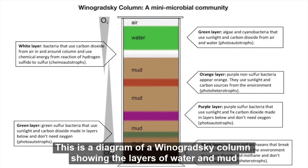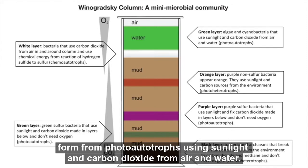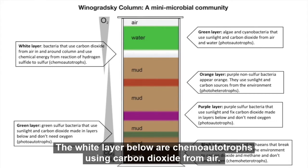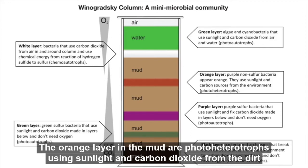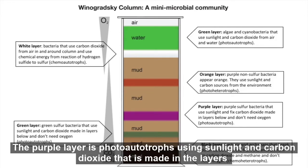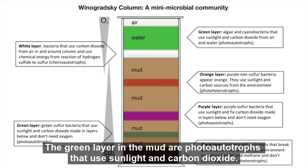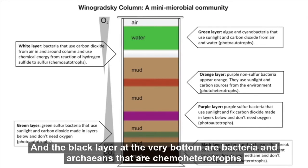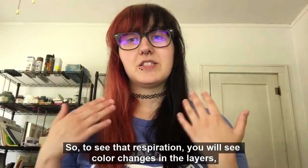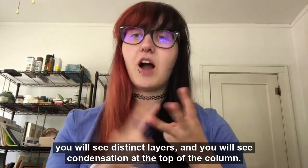Each organism will create its own unique color and very distinct, unique layers in the soil and mud in the column. This is a diagram of a Winogradsky column showing the layers of water and mud and the color layers that form. At the very top, a green layer forms from photoautotrophs using sunlight and carbon dioxide from air and water. The white layer below are chemoautotrophs using carbon dioxide from air. The orange layer in the mud are photo heterotrophs using sunlight and carbon dioxide from the dirt and air around them. The purple layer is photoautotrophs using sunlight and carbon dioxide made in the layers below, but without needing oxygen. The green layer in the mud are photoautotrophs using sunlight and carbon dioxide, and the black layer at the very bottom are bacteria and archaeans — chemo-heterotrophs that use the carbon source from the very bottom. To see that respiration, you will see color changes in the layers, distinct layers, and condensation at the top of the column.